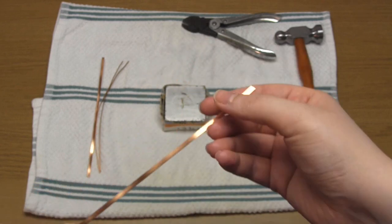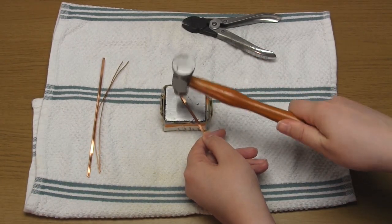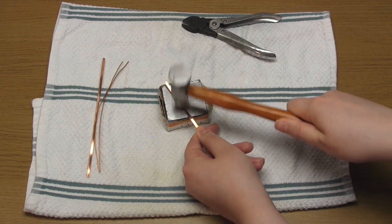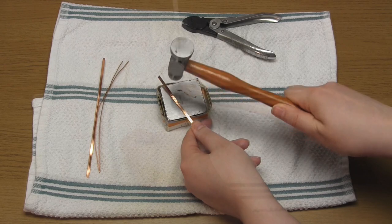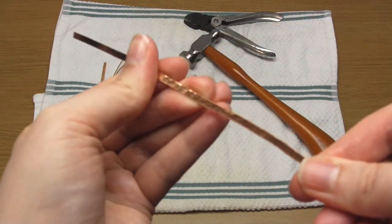If you want to add a hammered texture to these pieces so that they shine in the light, just place them on the steel block and tap them all over with the rounded end of the hammer. As you can see this creates a really nice effect.